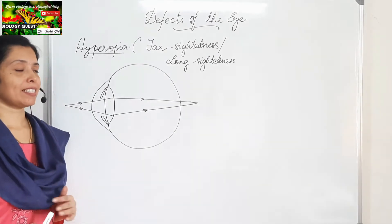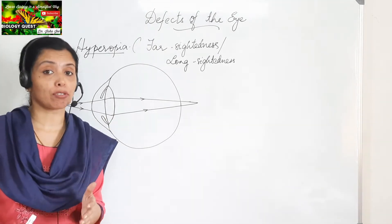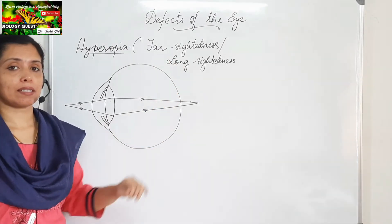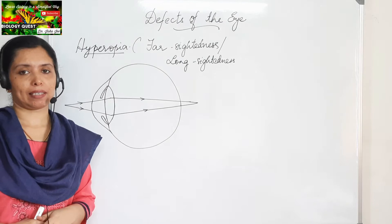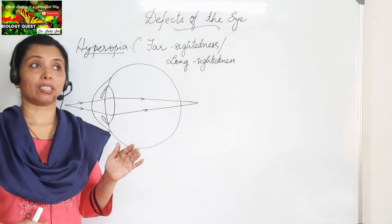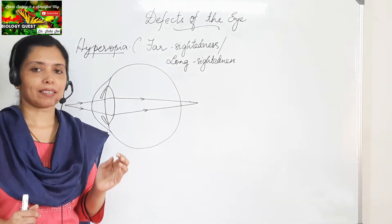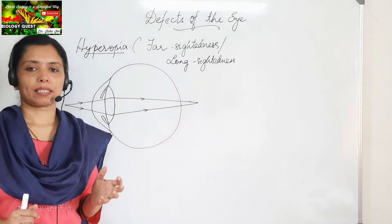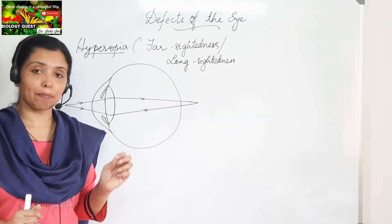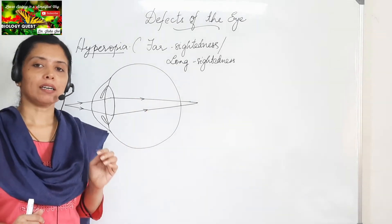We shall move on to the second defect, which is called hyperopia or hypermetropia, otherwise called as farsightedness or long-sightedness. This is a condition in which distant objects are clear, whereas nearby objects become blurred — it is difficult to see nearby objects clearly.